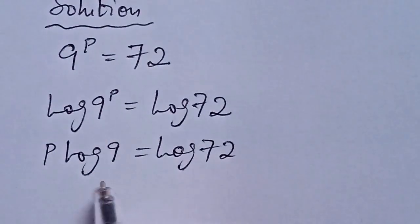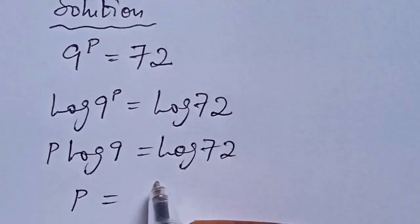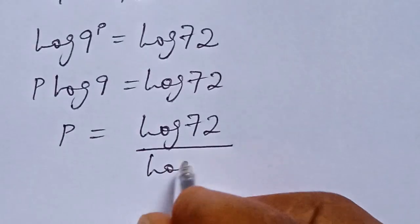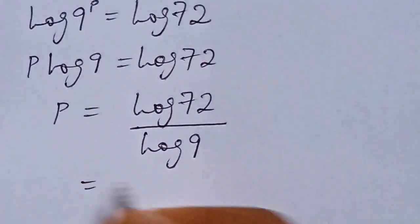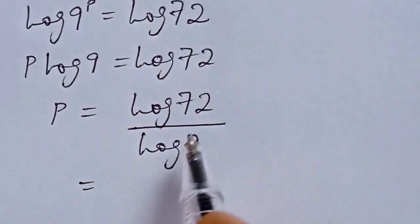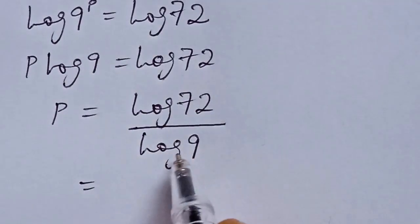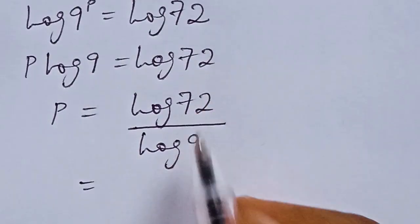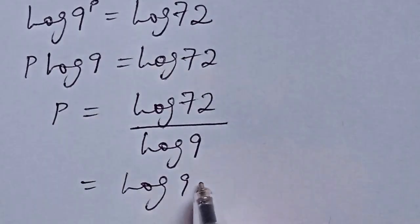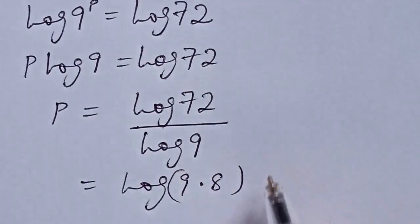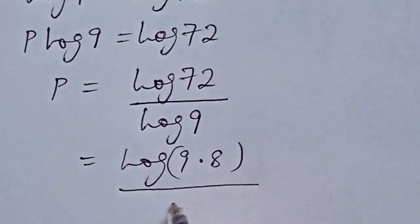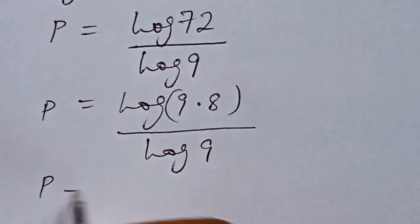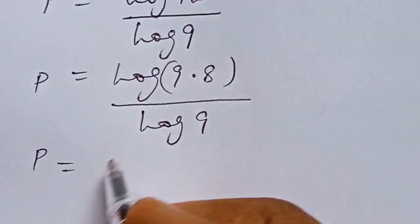We can divide both sides by log 9 to isolate p, giving us p equals log 72 over log 9. From here we need to simplify the numerator and denominator of the right-hand side. The numerator log 72 can be split as log of 9 multiplied by 8, all over log 9.